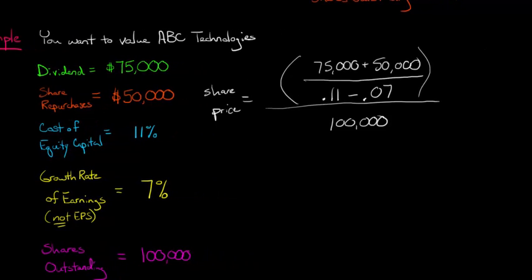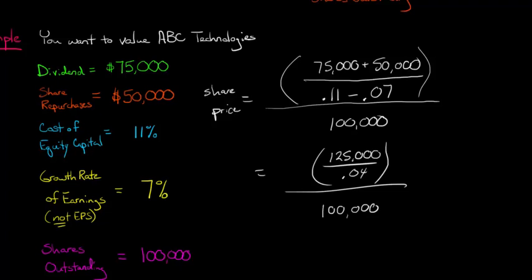So I'm running out of space a little bit here. There we go. So now we just go ahead and do the math here, do the algebra, and I'll break it down. So we're going to have 125,000 divided by 0.04. That's just simplifying what's in this parentheses up here. And then we divide that by 100,000. And then that's ultimately going to have a share price of $31.25.